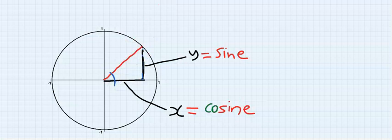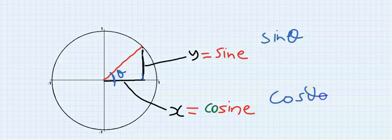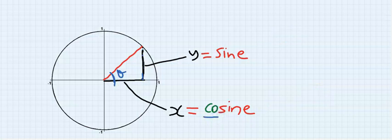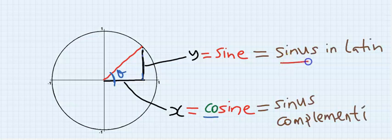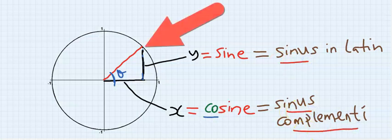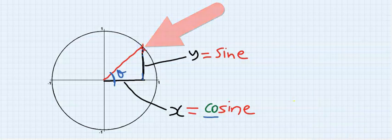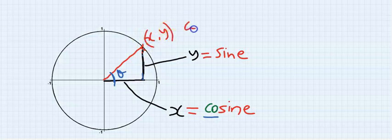If I consider theta here, I'm going to call this sine theta, and this horizontal length I will call cosine theta. The 'co' in front of cosine simply means the complement of sine. A complement is defined as two angles whose sum is 90 degrees. In Latin, sine is called 'sinus,' and cosine is called 'sinus complementi.' At this point we have the coordinate (x, y), which is simply (cosine, sine).